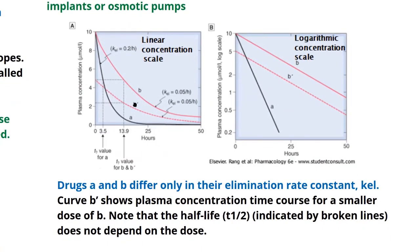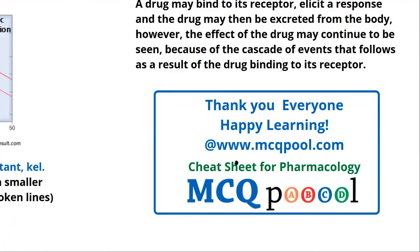There is another curve called B-dash, which shows the plasma concentration-time curve for a smaller dose of drug B. While the doses of A and B were the same, B-dash has a lesser dose but is the same drug. Since B and B-dash have the same elimination rate constant, they decrease in the same manner, and the t½ for both B and B-dash is the same. Thank you everyone — happy learning. This is a part of cheat sheets of pharmacology at MCQ Pool.